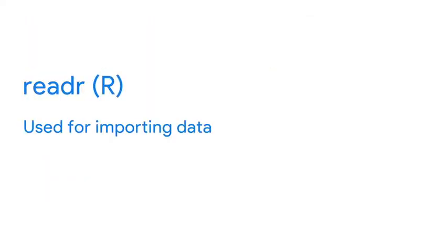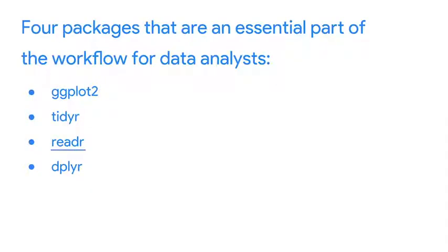Next, we have readr, which is used for importing data. The most common function from readr is read_csv. This will import a CSV file into R. A CSV file contains data separated by commas in a table format. To accurately read a dataset with readr, you combine the function with a column specification. The column specification describes how each column should be converted to the most appropriate data type. This isn't usually necessary because readr will figure it out for you automatically.